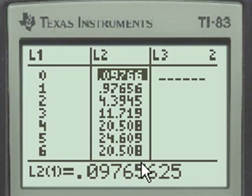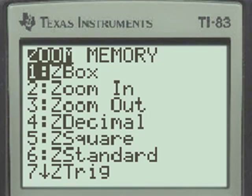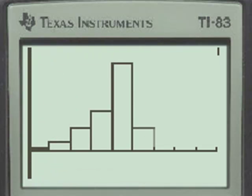Now to graph this, to see the histogram that represents the Binomial Probability Density function for this particular question, we're going to go to the zoom 9 command, and we get this initial histogram.